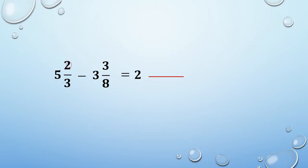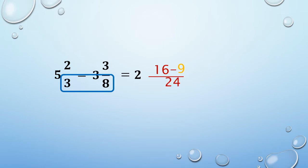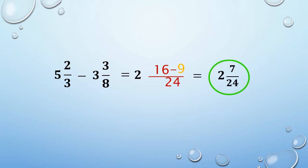Multiply the numerator of the minuend by the denominator of the subtrahend. Multiply the numerator of the subtrahend by the denominator of the minuend. Then subtract the two products. To get the denominator of the answer, multiply the denominators. Simplify the answer if possible.